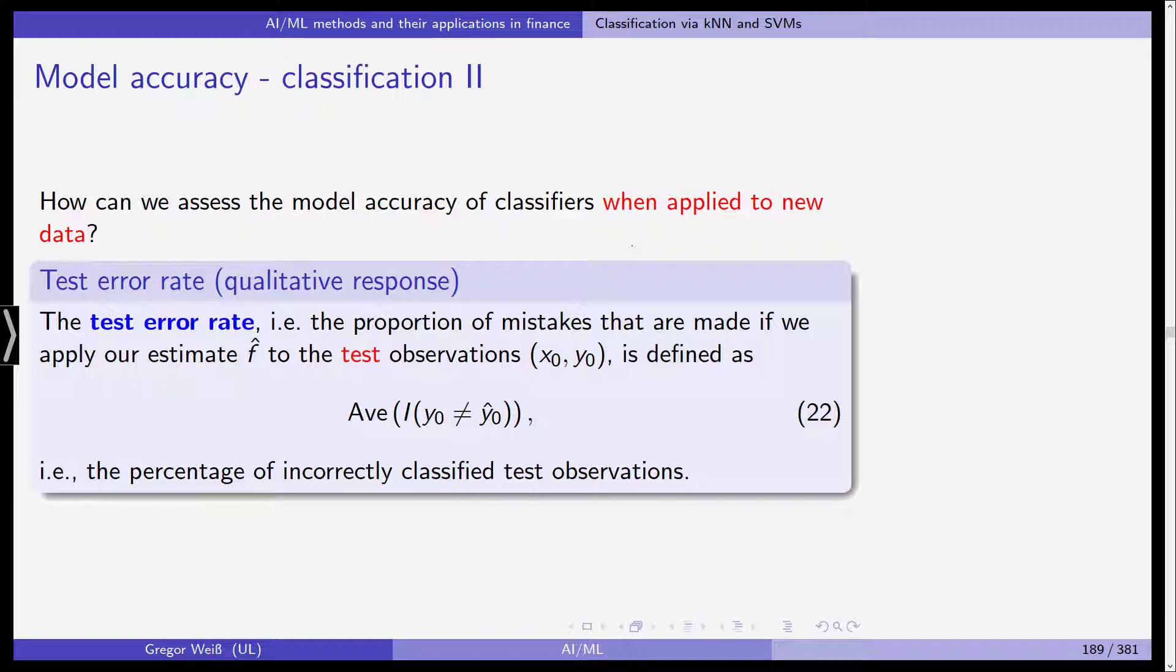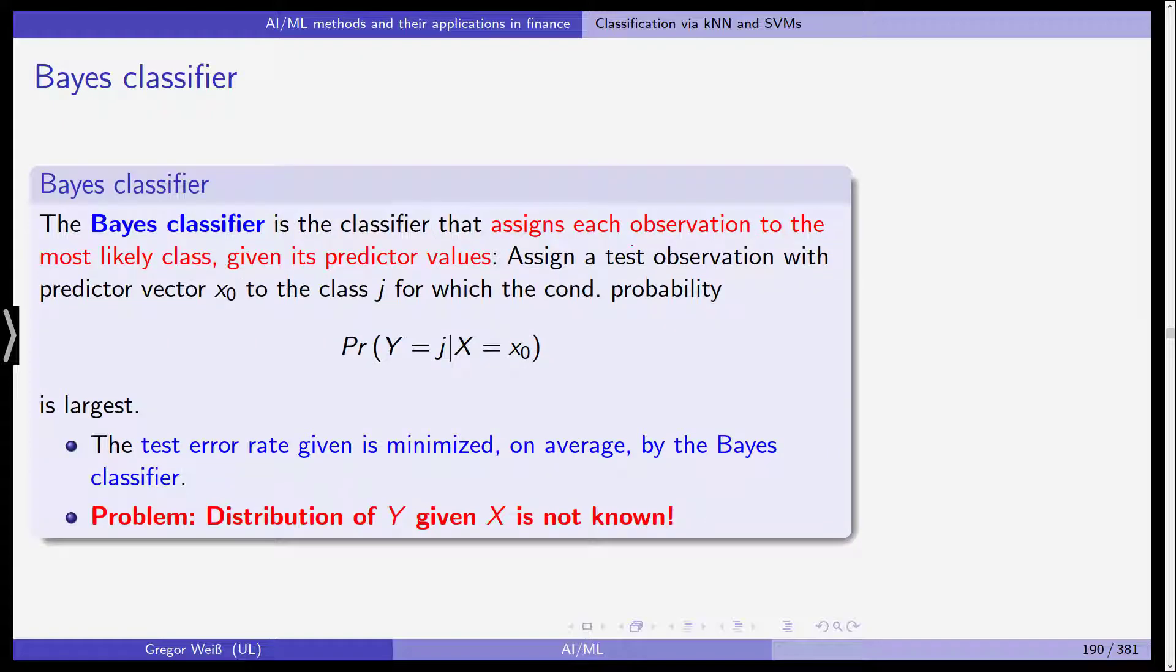The test error rate, again the proportion of mistakes that we make if we apply our estimate to the test observations x0, y0, is defined as the average of a comparison of the responses y0 and whether we can actually predict it correctly or not. So it's the percentage of incorrectly classified test observations. And naturally, we are looking for classifiers that are able to reduce both the training and the test error rate.